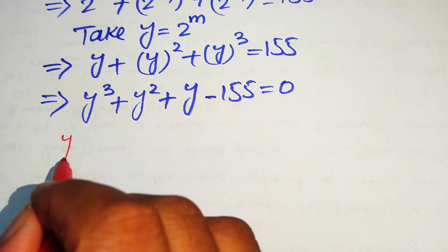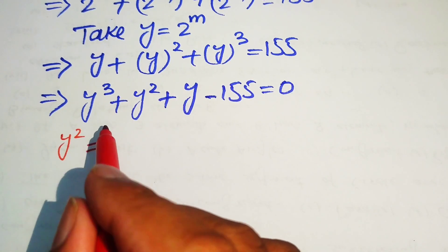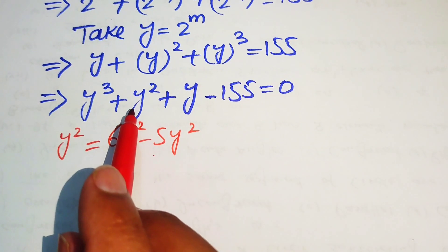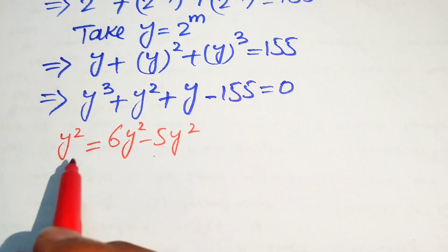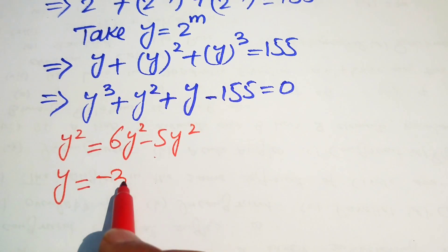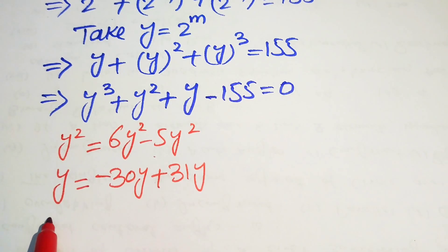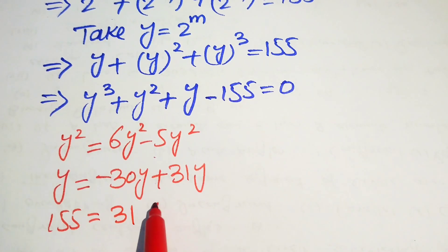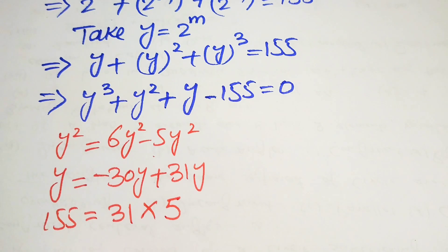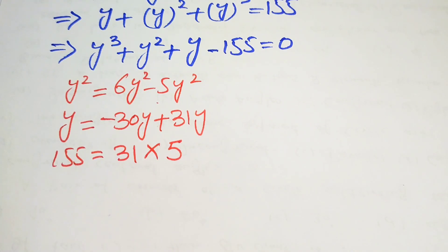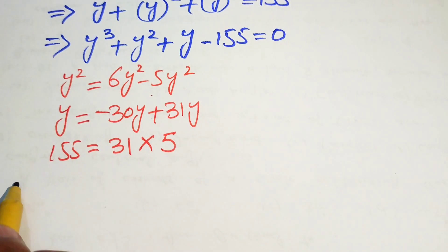To factor this cubic, we split the terms: y squared becomes 6y squared minus 5y squared, y becomes minus 30y plus 31y, and 155 equals 31 times 5. You can alternatively use synthetic division to solve the cubic, but this splitting approach is a straightforward way to find the factors.